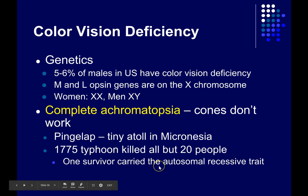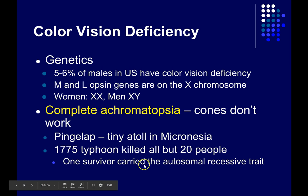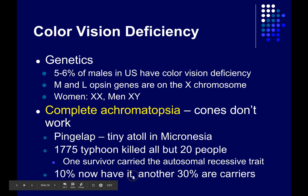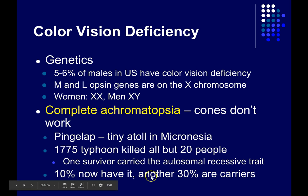One of the survivors of the typhoon, possibly the king, was a carrier for this autosomal recessive trait. Autosomal means that the gene is not on one of the sex chromosomes, and recessive means that you need two copies of the allele for this trait in order to see the trait. The individual who carried this trait did not have complete achromatopsia — they were just a carrier. But today, 10% of the people on the island have complete achromatopsia, and another 30% are carriers.